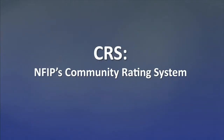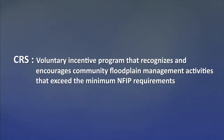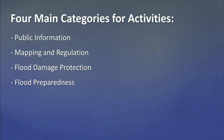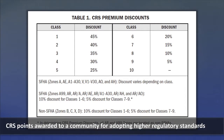The NFIP's Community Rating System, or CRS, is a voluntary incentive program that recognizes and encourages community floodplain management activities that exceed the minimum NFIP requirements. It accomplishes this by awarding points to a community for activities that FEMA has determined reduce flood damages. The more points earned by the community, the larger the premium discounts for those residents carrying flood insurance. CRS points are awarded to a community for adopting any of the higher regulatory standards discussed in this video.